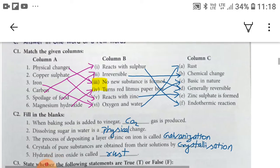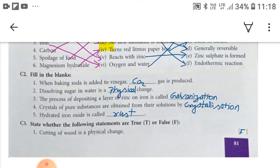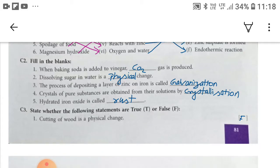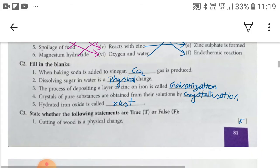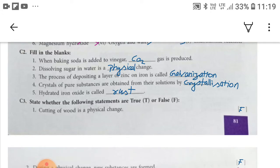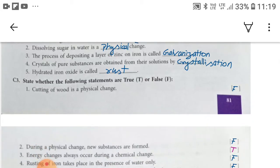Now you can see the C2 part, fill in the blanks. First, when baking soda is added to vinegar, here you have to fill carbon dioxide in the given empty place, gas is produced. Second, dissolving sugar in water is a physical change. Third, the process of depositing a layer of zinc on iron is called galvanization. Fourth, crystals of pure substances are obtained from their solutions by crystallization.